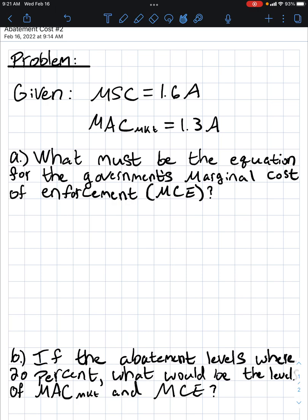Part A, what must be the equation for the government's marginal cost of enforcement? To solve this, we need to find the relationship. And that relationship is that the marginal social cost is equal to marginal abatement cost of the market plus marginal cost of enforcement.